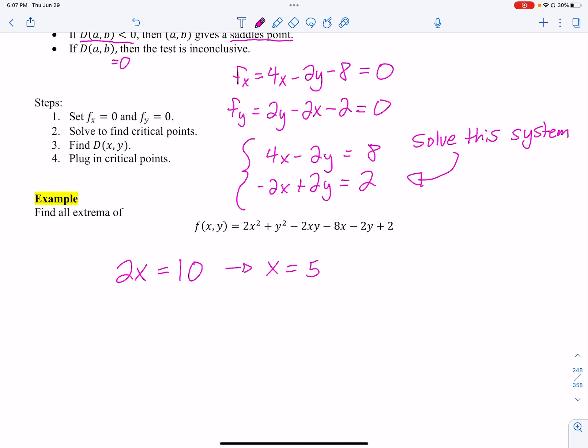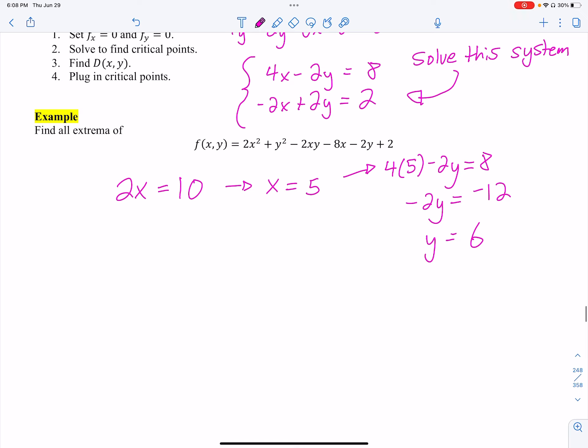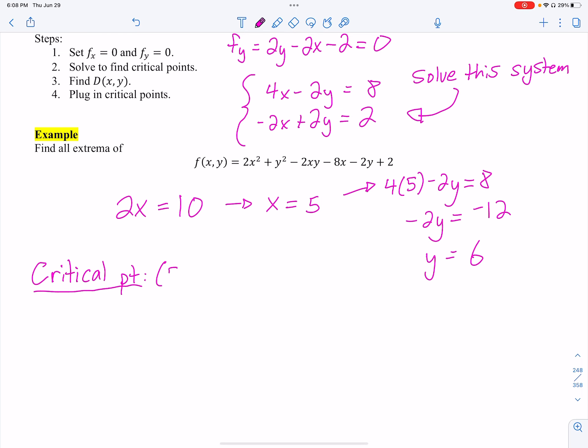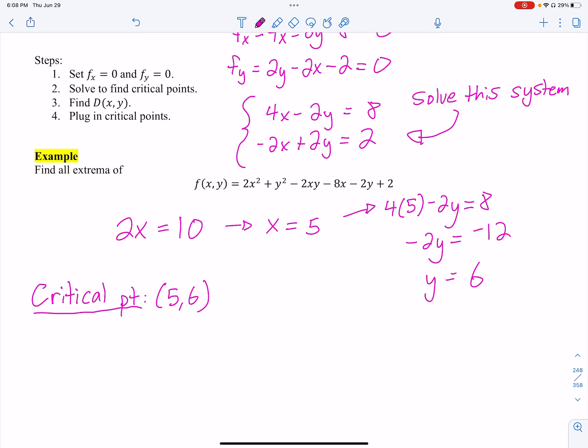For that, and then if I want to find y, I just plug that back in. I got 4 times 5 minus 2y equals 8. That gets me negative 2y equals negative 12. And then that means y is 6. So the critical point for this, we're going to list these in a minute, we have 5 comma 6 is a critical point. Usually, sometimes these systems will spit out four critical points. Sometimes it'll be one. Sometimes it'll be none. So there's my critical point.